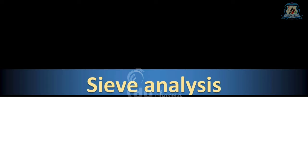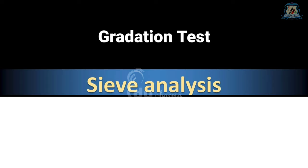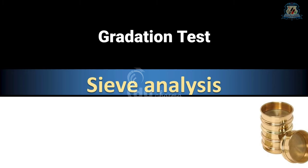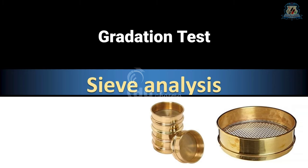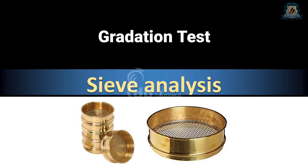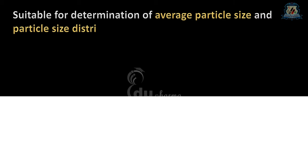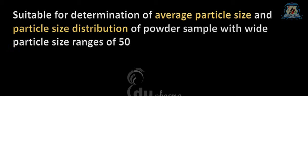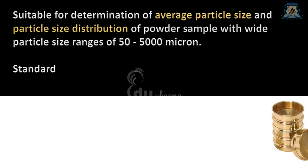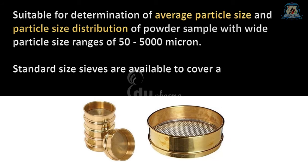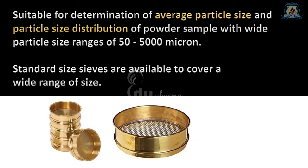A sieve analysis, also known as the gradation test, is actually a laboratory practice used to assess the particle size distribution. It is one of the ancient methods used to study the particle size and distribution. This method is suitable for the determination of average particle size and particle size distribution of powder samples with wide particle size ranges of 50 to 5000 micrometers, and for this purpose standard size sieves are available to cover a wide range of sizes.